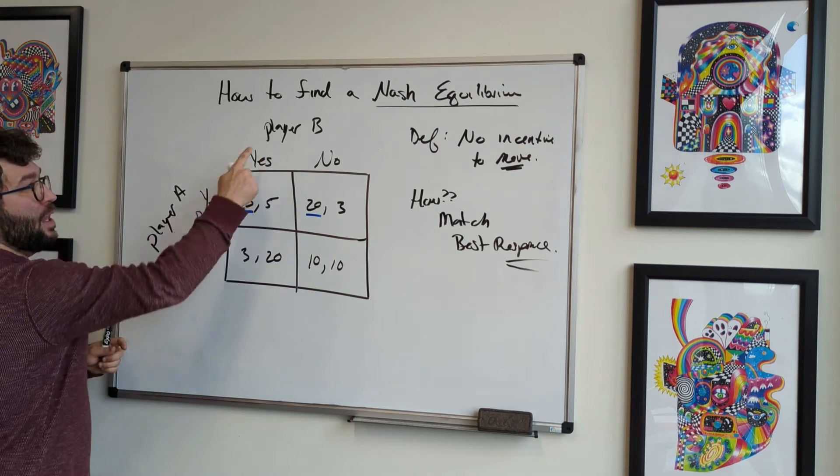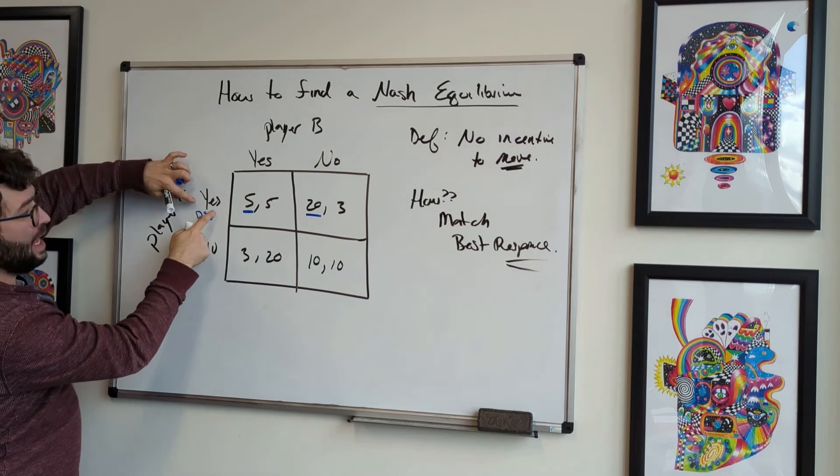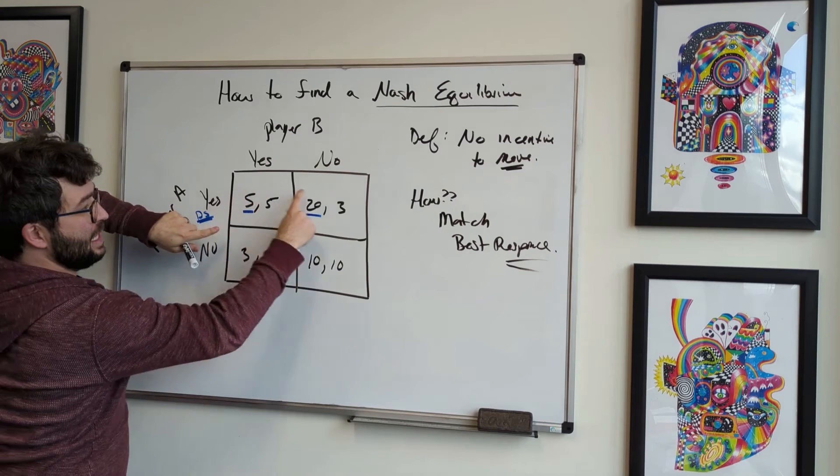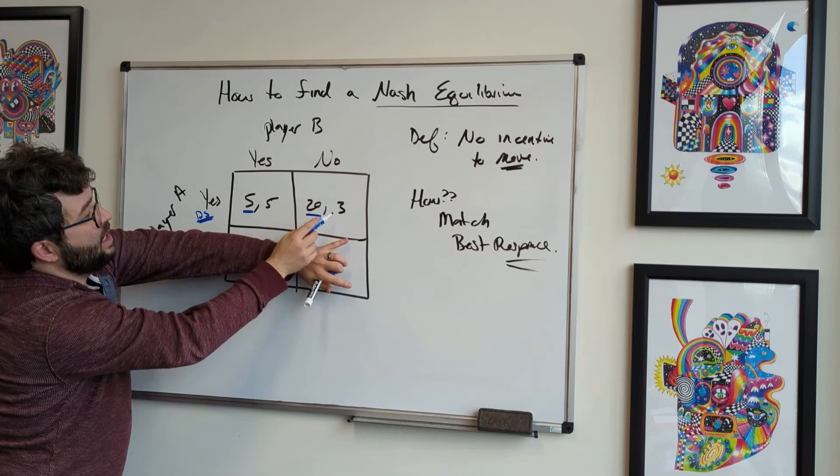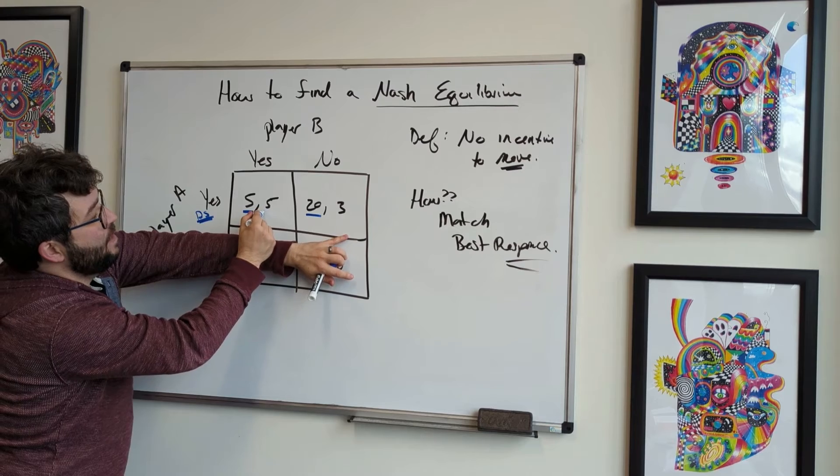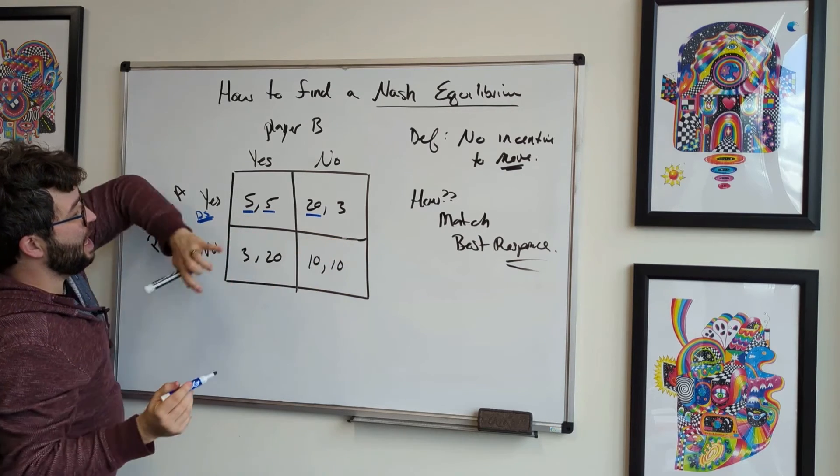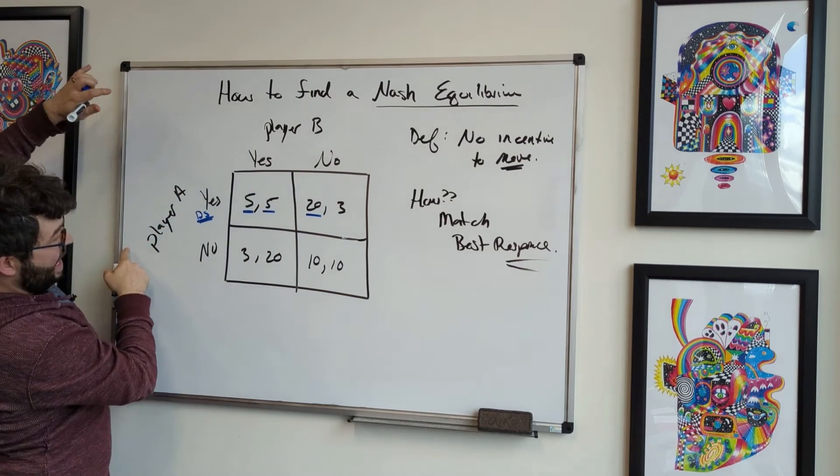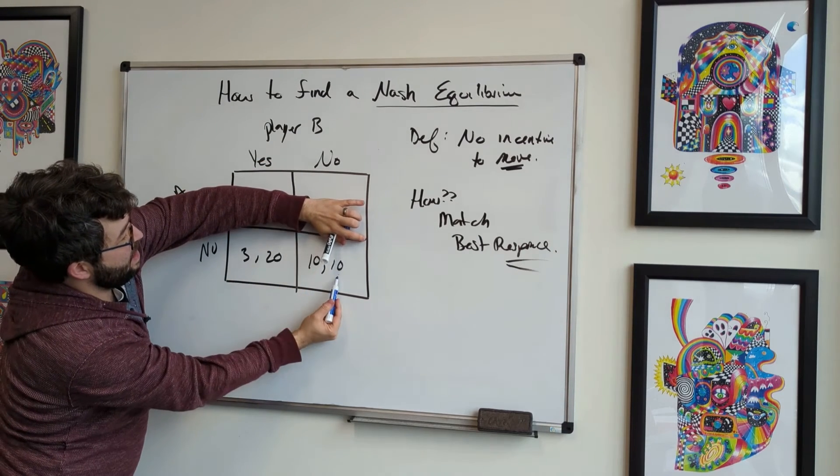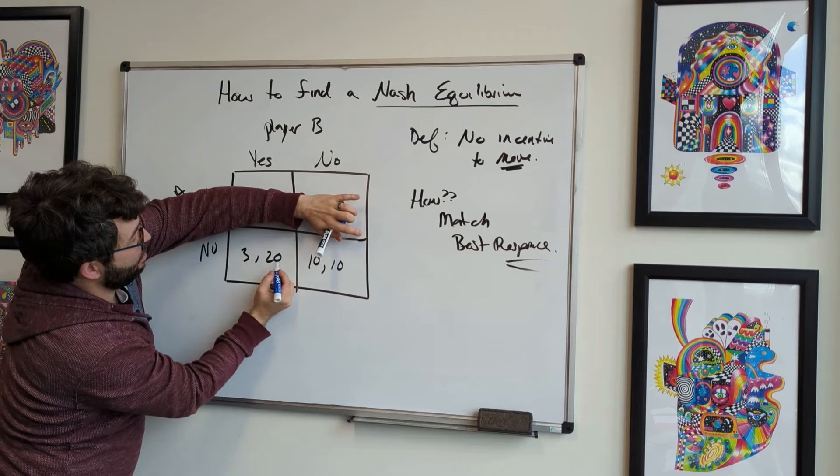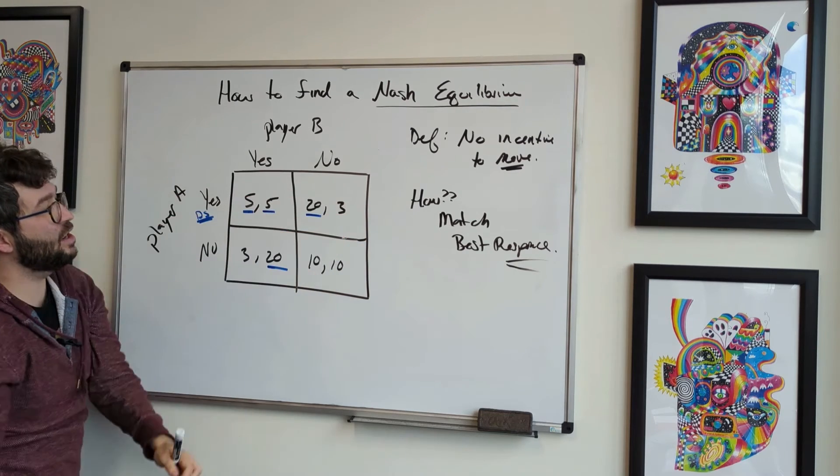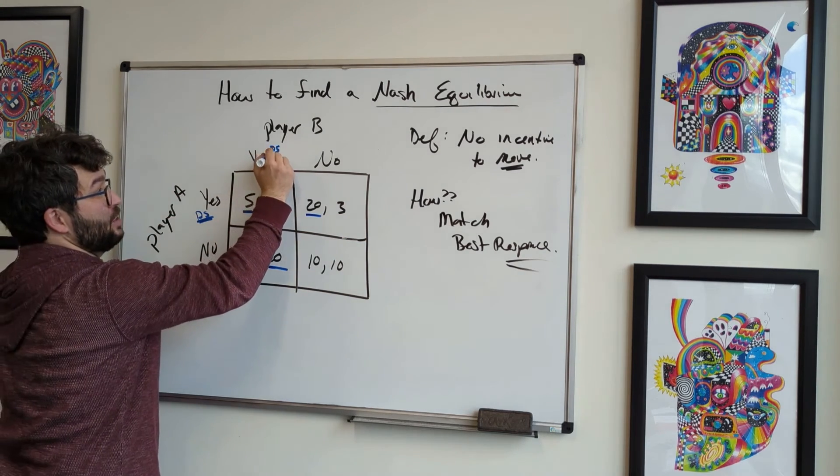Now let's go for player B. So if player A is playing yes, that means it's this row right here, so we can cover up the bottom row. Player B can either play three or five, so it wants to play five. And if we cover up, we say that player A is only going to play no, then we know player B can do 10 or 20. Which one do they want? Well, 20 is better, so they're going to go over here. Again, this is actually a dominant strategy.